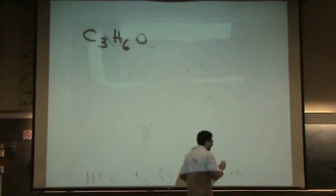For this one, we want to draw all the isomers, geometric and structural isomers. So what we're going to do first, it is helpful for me to find the degree of unsaturation, because that will tell me what kinds of structures I'm going to be drawing.